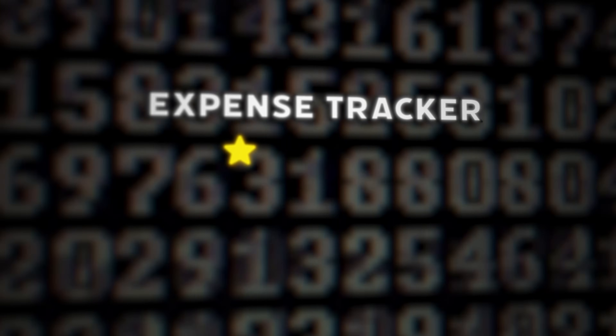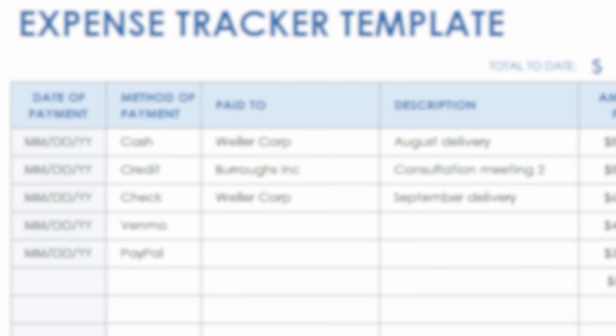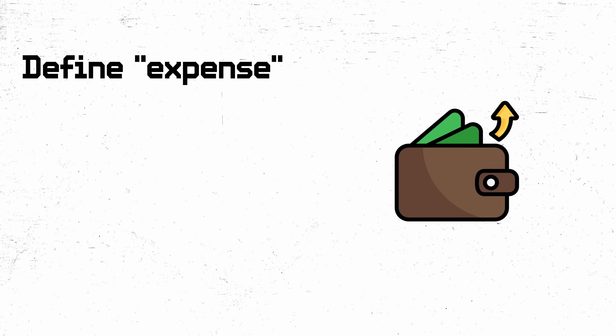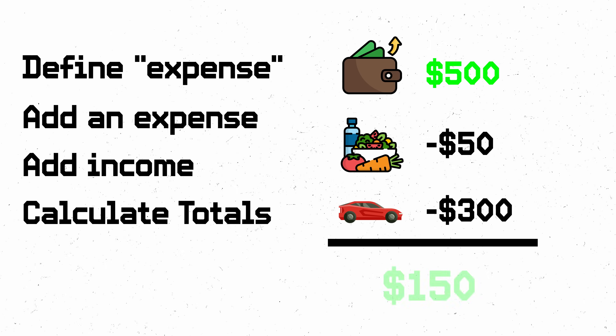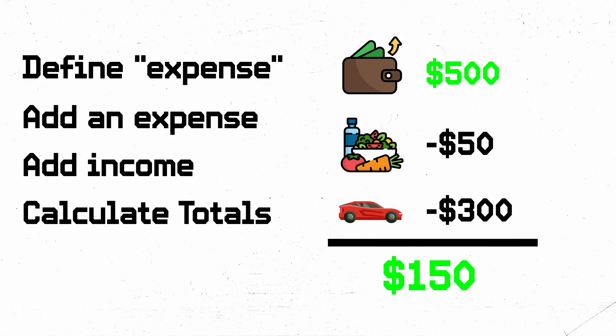Expense tracker. If you've seen my self-taught software engineer roadmap, which you probably should, then I use this specifically as an example. An expense tracker is a great way to work with numbers, data types, and user interfaces. Breakdown: define what an expense is — name, price, the date. Be able to add an expense, be able to add income, be able to calculate everything and show what's left over. This is bare bones, so adjust it to how you need.